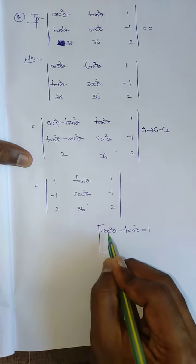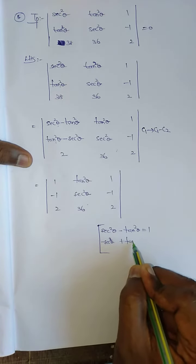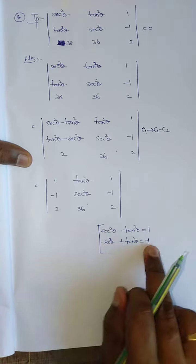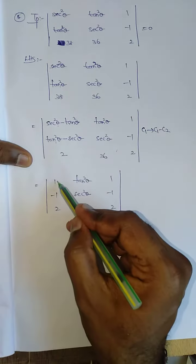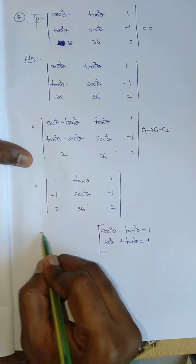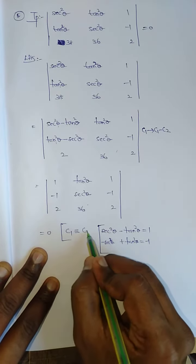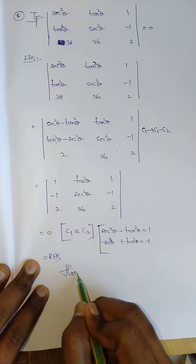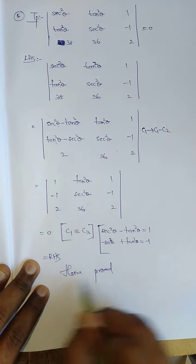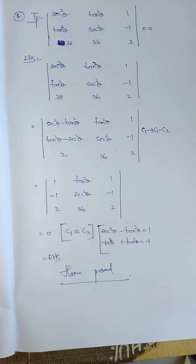Using the identity: sec²θ minus tan²θ equals 1, and tan²θ minus sec²θ equals minus 1. So the determinant now has C1 as [1, minus 1, 2] and C3 as [1, minus 1, 2]. Since C1 is identical to C3, the determinant equals 0, which equals the RHS. This is a very easy sum to prove — we just need the thinking capacity to reduce it using column operations.